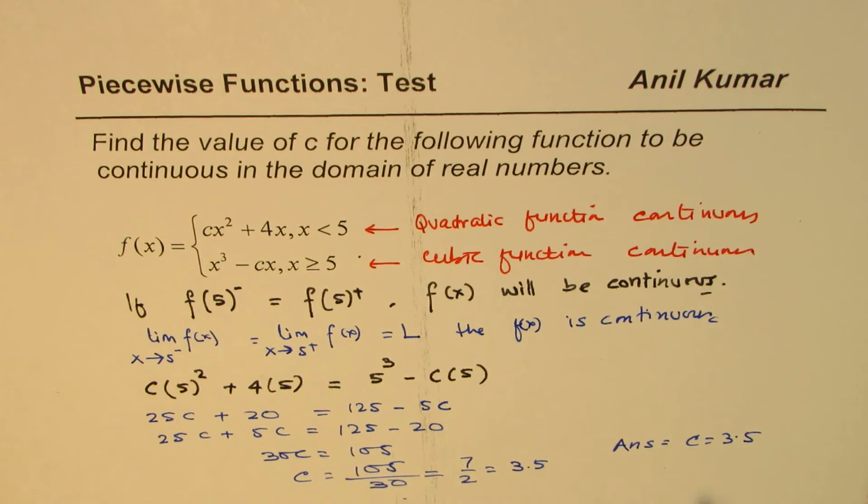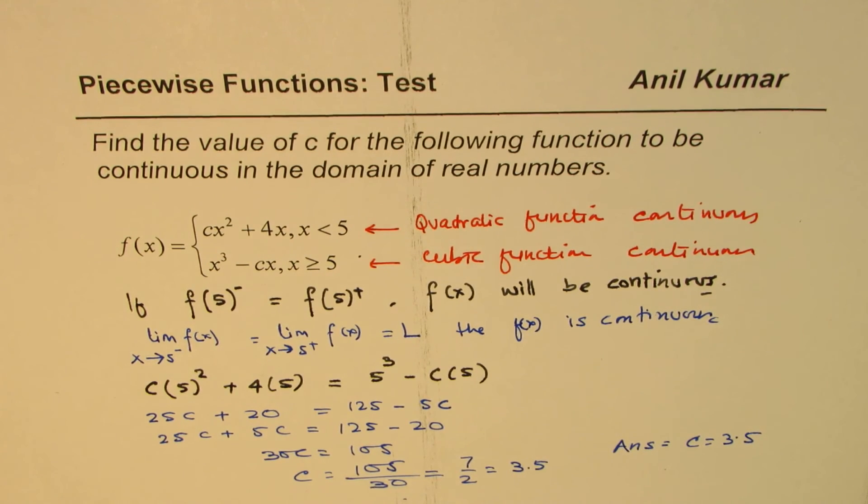If this is not 3.5, then this function will have what kind of discontinuity? Jump discontinuity at 5. I hope that is clear. I'm Anil Kumar and I hope that helps. Thanks for sharing such questions. You can always share and subscribe to my videos. Thank you and all the best.